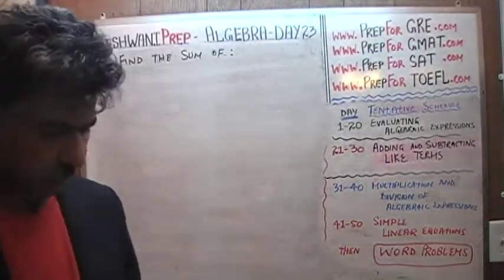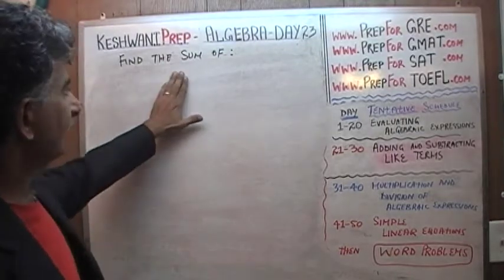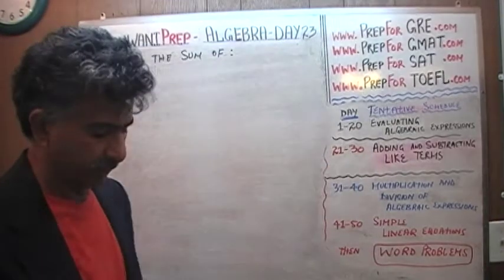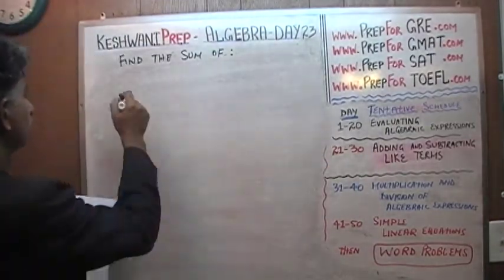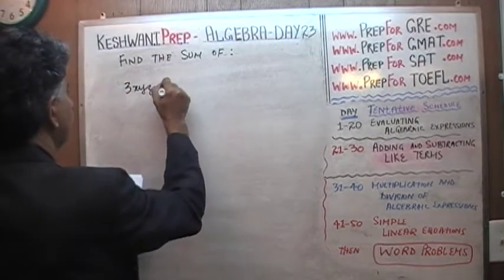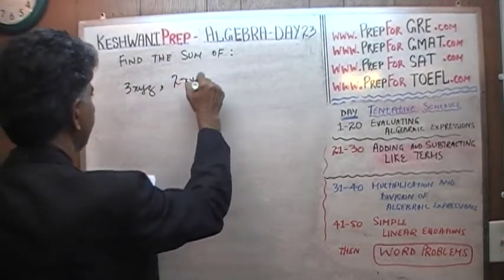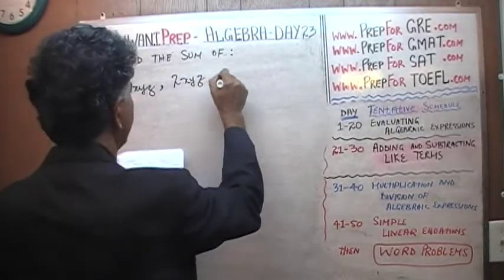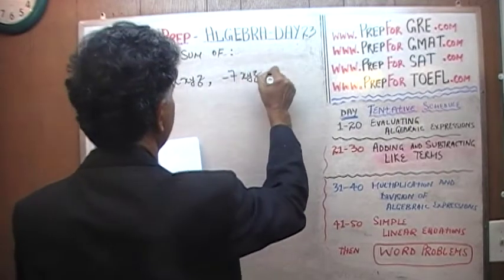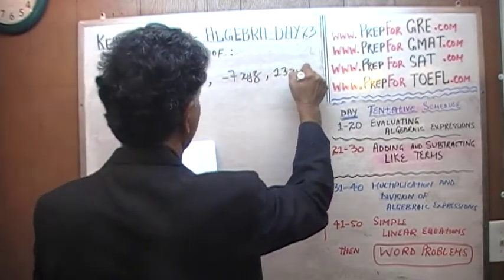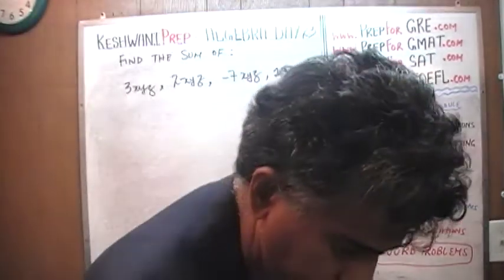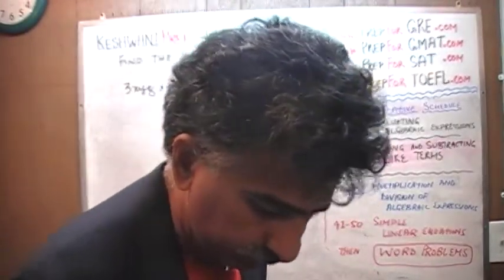Let's see what we have for today. Here's the problem: we have to find the sum of some algebraic terms — adding and subtracting like terms. That's what we're doing right now. So here we go: we have 3xyz, 2xyz, negative 7xyz, and finally 13xyz. The question is: what is their sum?